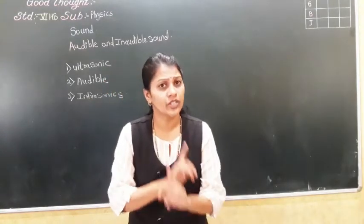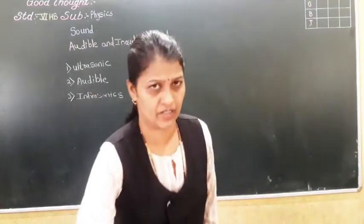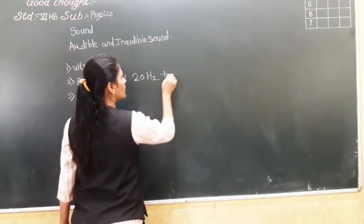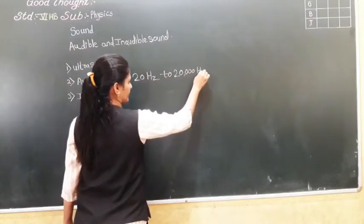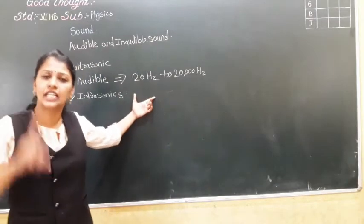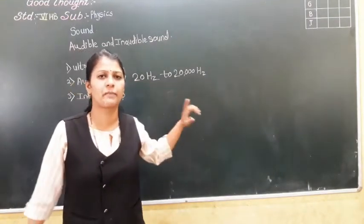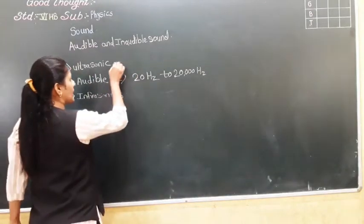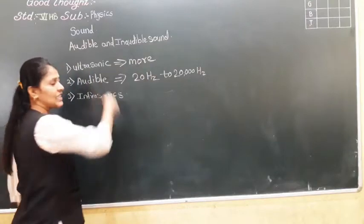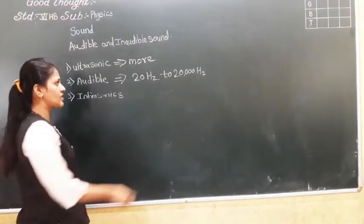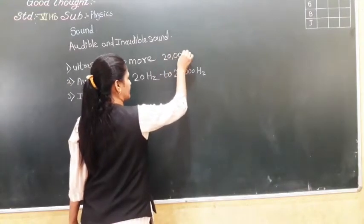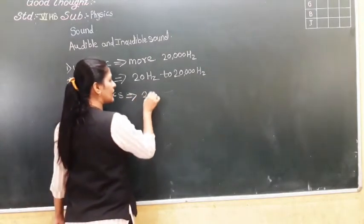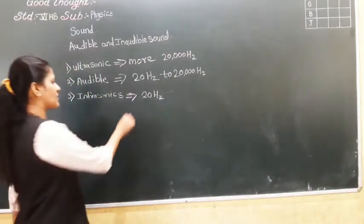We are unable to hear it. The range of human hearing is 20 hertz to 20,000 hertz. If the sound is more than 20,000 hertz, then that sound is called ultrasonic sound. And if the sound is less than 20 hertz, that sound is called infrasonic sound.